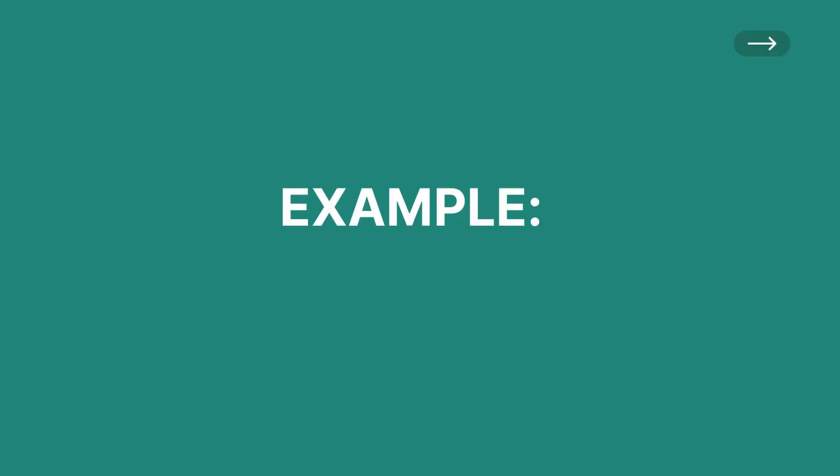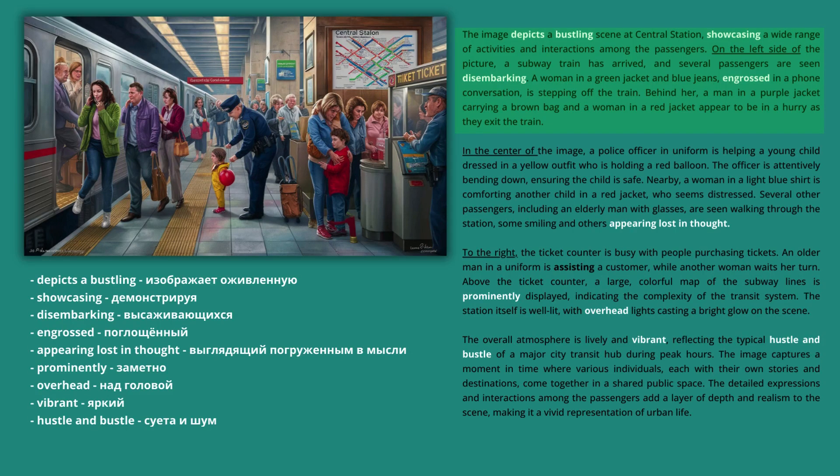Example response: The image depicts a bustling scene at Central Station, showcasing a wide range of activities and interactions among the passengers. On the left side of the picture, a subway train has arrived and several passengers are seen disembarking. A woman in a green jacket and blue jeans, engrossed in a phone conversation, is stepping off the train. Behind her, a man in a purple jacket carrying a brown bag and a woman in a red jacket appear to be in a hurry as they exit the train.